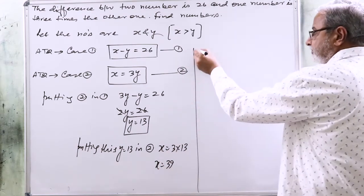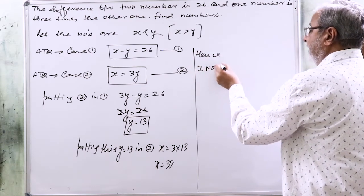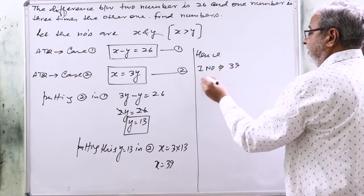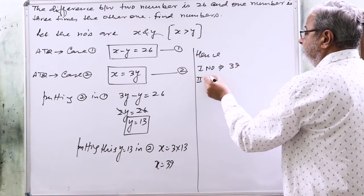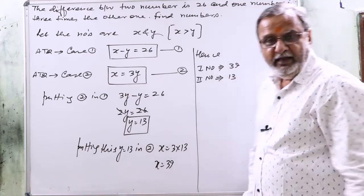Hence, first number equals 39 and second number equals 13. Thank you.